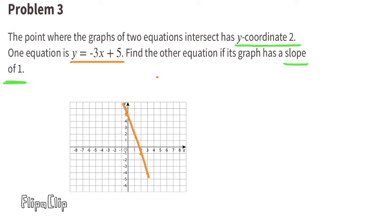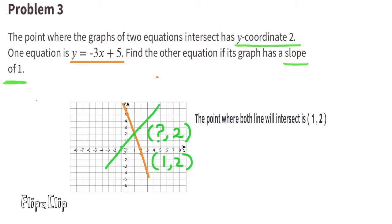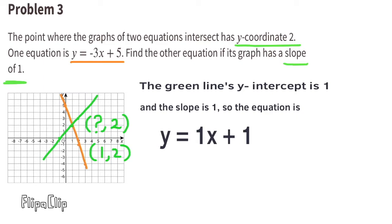Problem number 3. The point where the graphs of two equations intersect has a y-coordinate of 2. One equation is y equals negative 3x plus 5. Find the other equation if the graph has a slope of 1. Let's start by putting a point at the location where the two equations intersect — that would be at y-coordinate 2. To make the second graph, we can start at that point and move up 1 and to the right 1, since it has a slope of 1. We could also move to the left 1 and down 1. Draw a straight line through these points. Since the second equation has a slope of 1 and a y-intercept of 1, its equation would be y equals 1x plus 1.